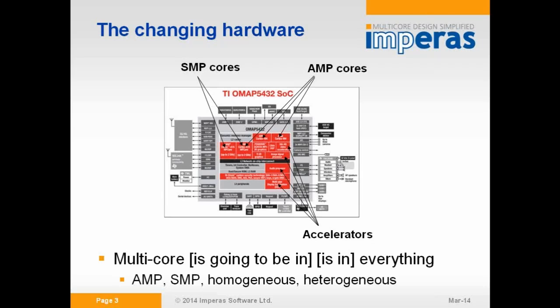Multicore is going into everything — it's in most things now, and if it's not, it's going to be. There can be different configurations: symmetric, where they're the same processors sharing memory; asymmetric, when they're not; maybe there's communication between them; and then accelerators. So there are all sorts of different challenges from a hardware point of view.